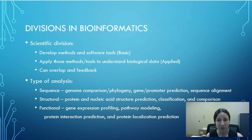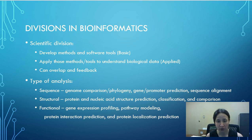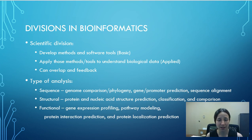We can develop methods or statistical software tools — this would be basic bioinformatics — or we could take those tools and methods and apply them to understand a particular real-world problem. Of course, these basic and applied divisions can overlap and they can also cause a feedback loop, where applying basic knowledge to a real-world situation reveals new questions that can then be better answered through basic science approaches.